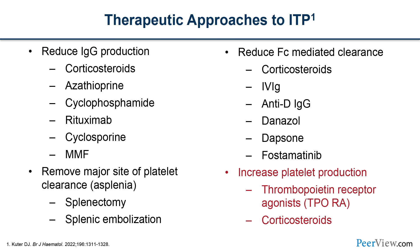There is still a lot we don't know about why every individual patient is different. If you're a clinician taking care of ITP patients, how do you know whether the patient is destroying too much or not making enough? One approach is the immature platelet fraction, using it like a reticulocyte count in anemia to see if there is an appropriate compensatory response. But we don't really have good tests yet for distinguishing these patients, and we'd love a panel of tests to know which patients would respond best to which therapies.